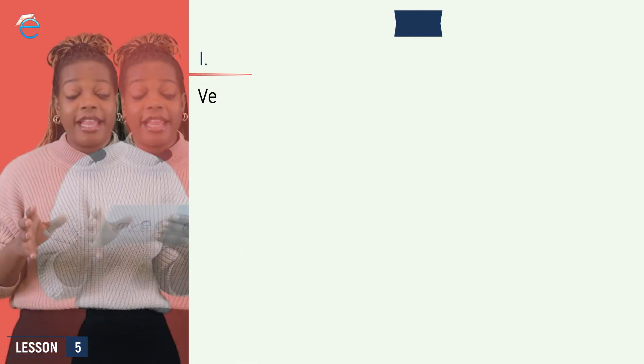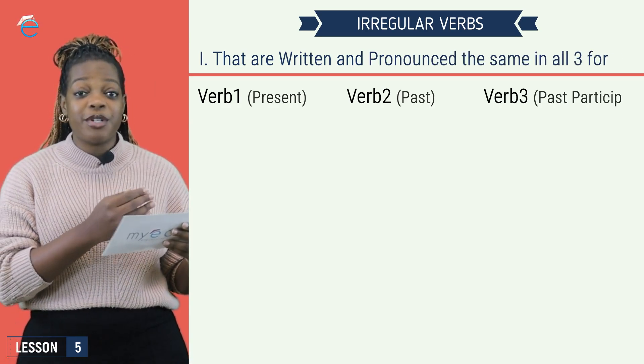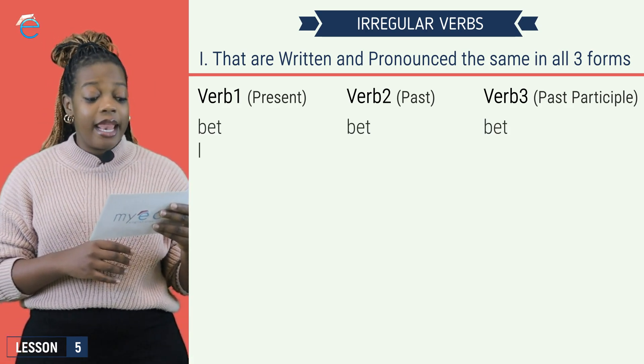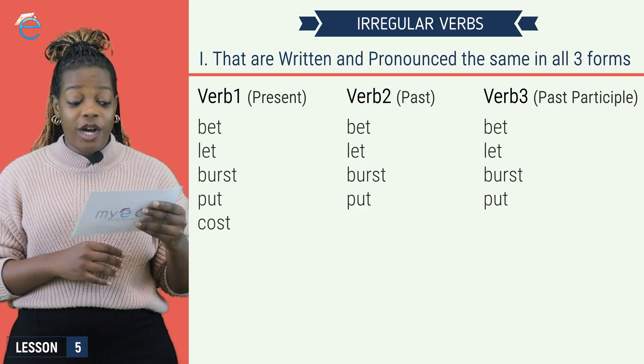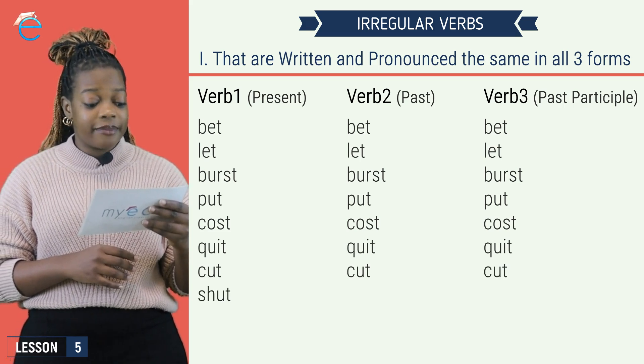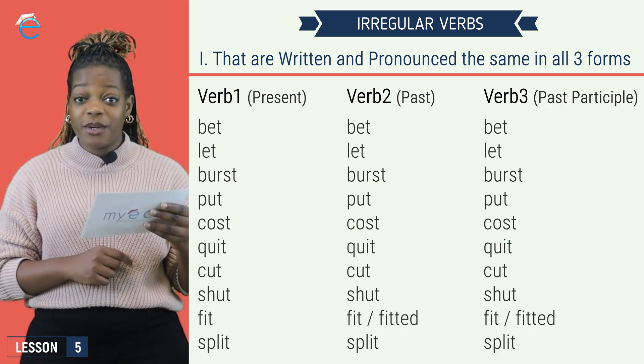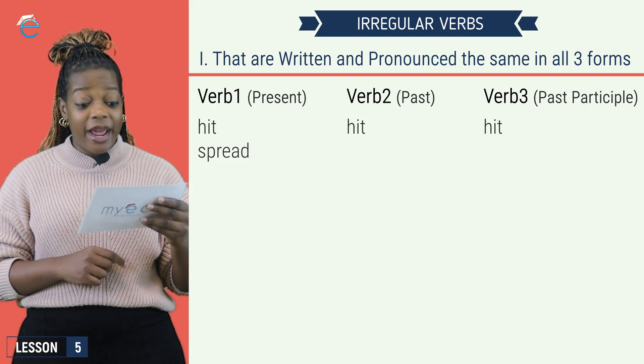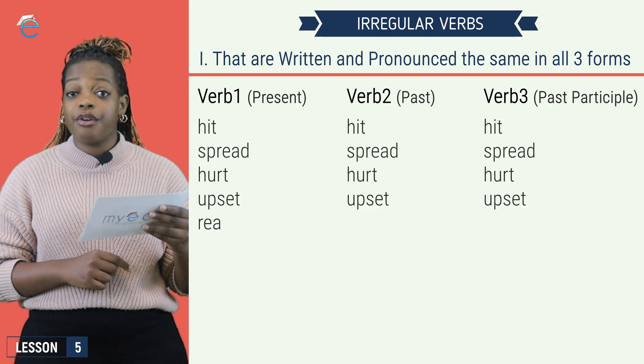Group one has verbs that are written and pronounced the same in their verb one, verb two, and verb three forms. Bet, let, burst, put, cost, quit, cut, shut, fit, which can also be fitted, hit, spread, hurt, upset.